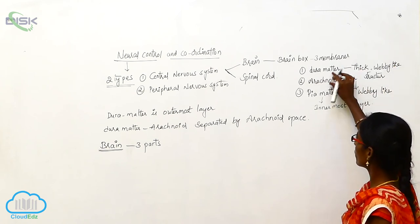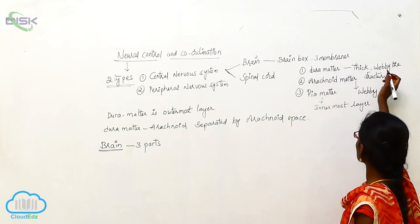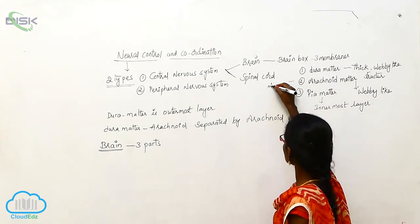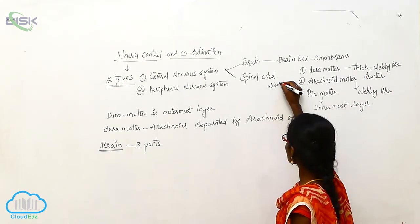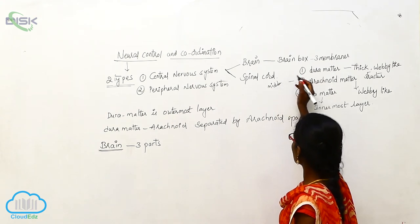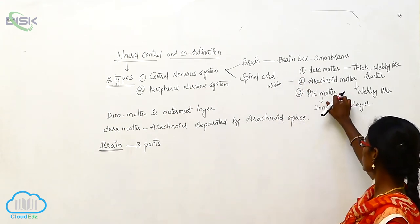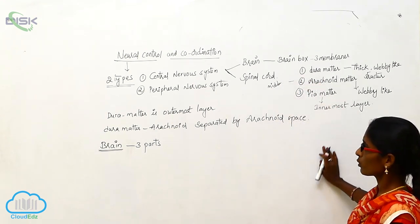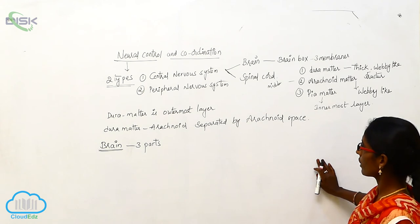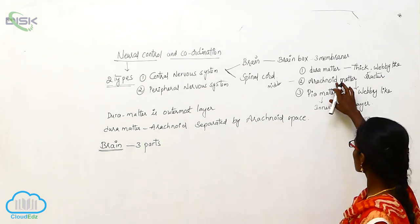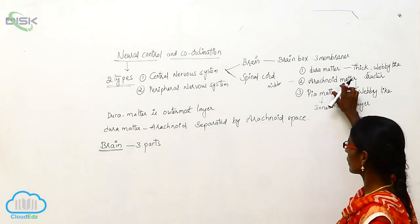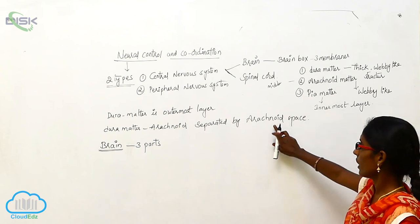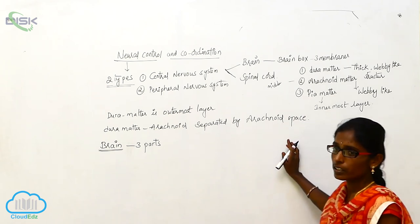Arachnoid Mater is the middle layer, and Pia Mater is the innermost layer. The Dura Mater and Arachnoid Mater are separated by the arachnoid space.